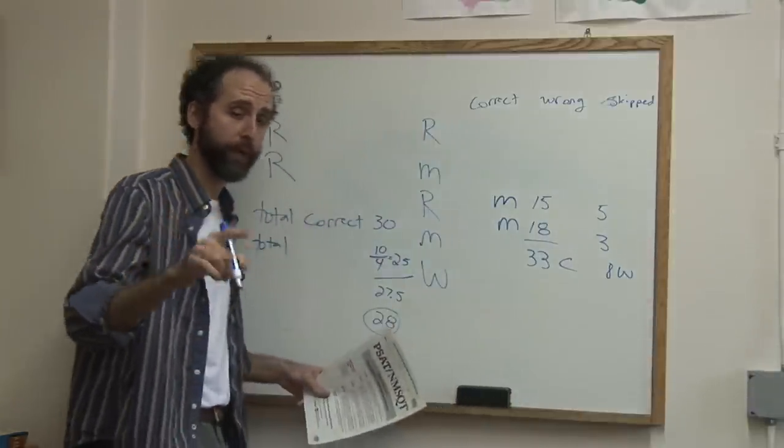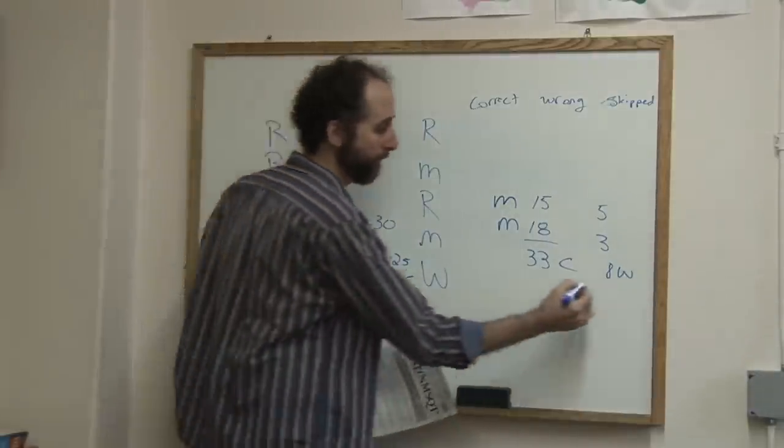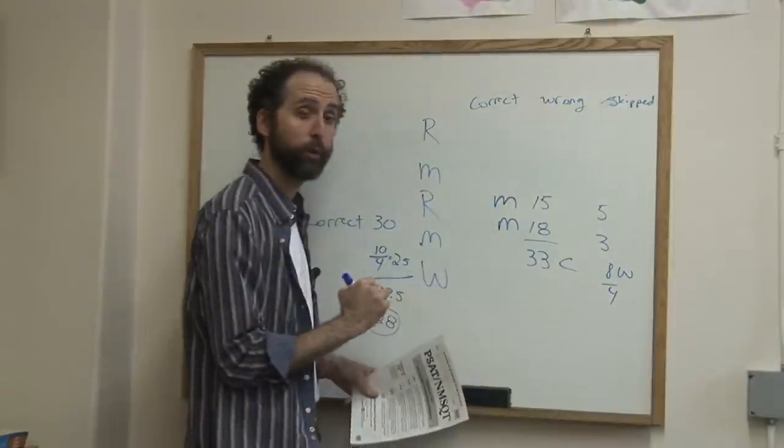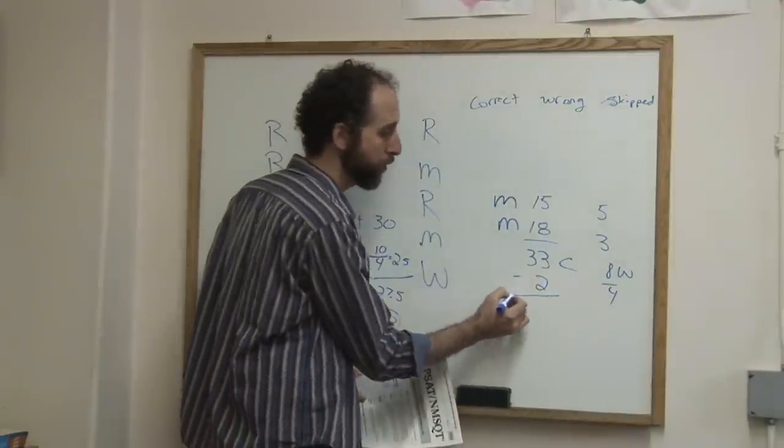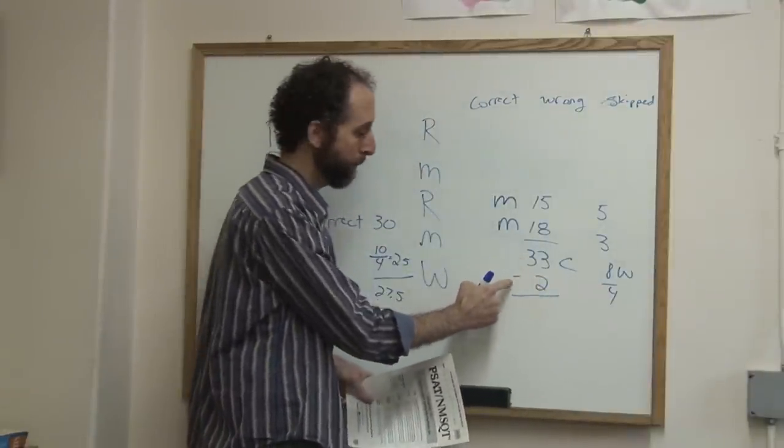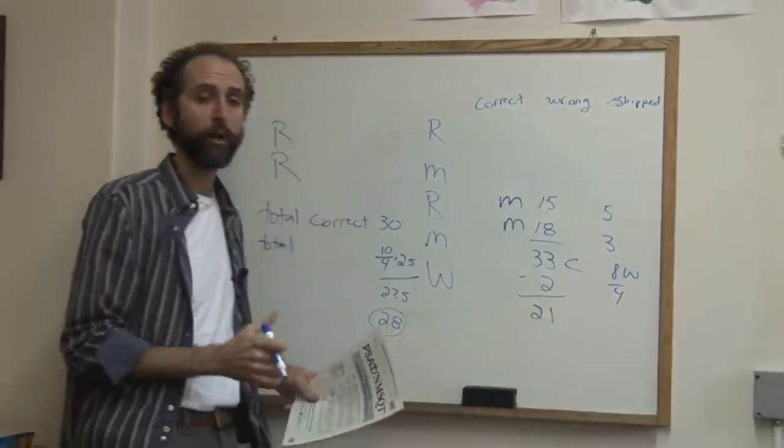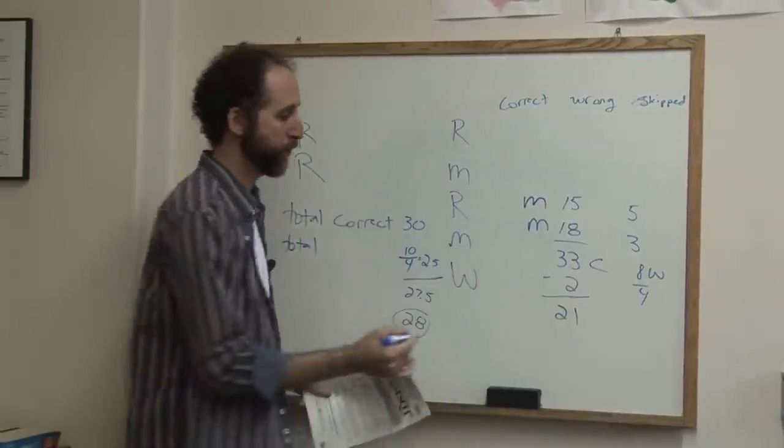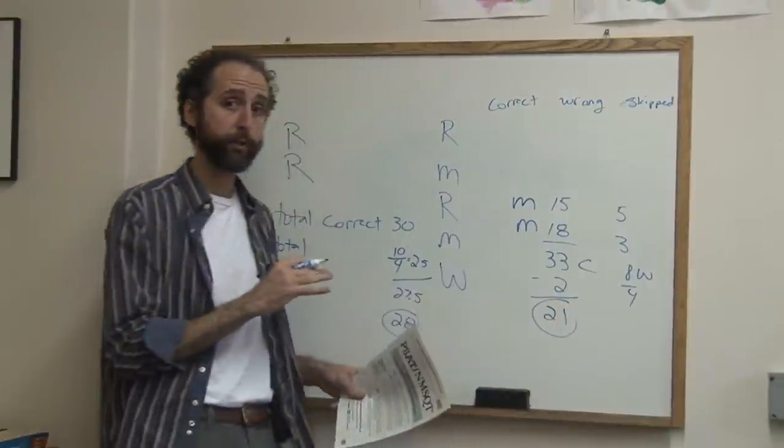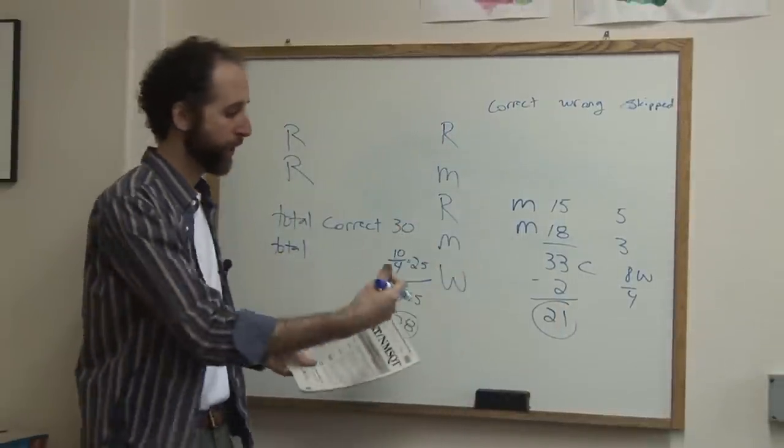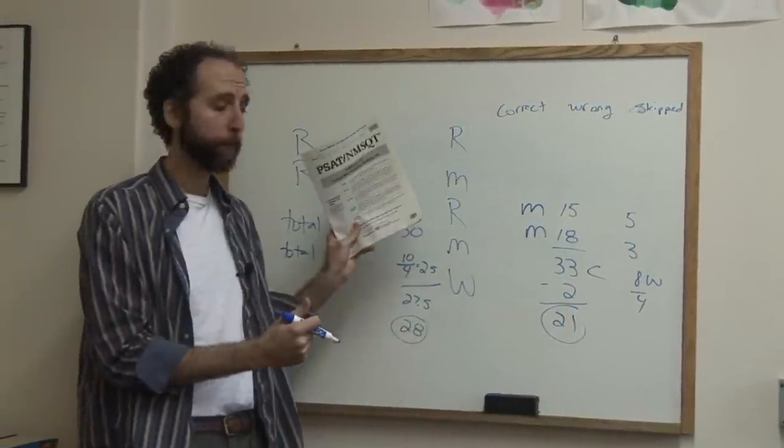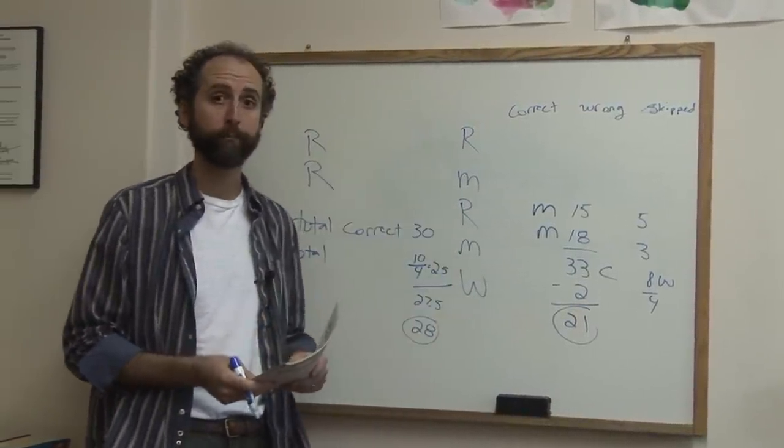You're going to divide that 8 by 4 again. It's always by 4. So 8 over 4 is 2. You're going to do 33 minus 2. So it's amount correct minus the amount wrong divided by 4, that's your raw score. Your raw score is 31. Now that's not your PSAT score, that's your raw score. You check on the scale sheet which it gives you in the packet, and you'll find out your math score.